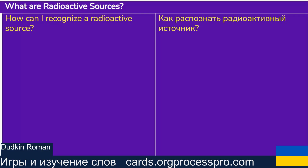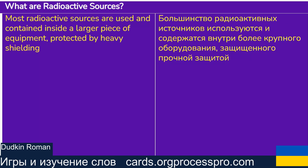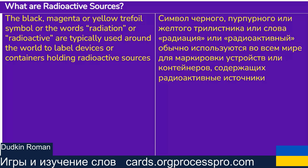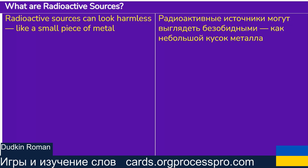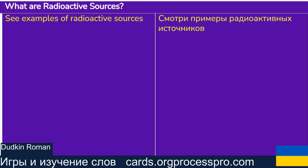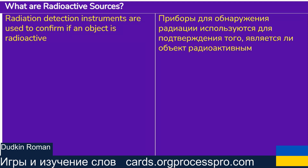How can I recognize a radioactive source? Most radioactive sources are used and contained inside a larger piece of equipment, protected by heavy shielding. The black, magenta or yellow trefoil symbol, or the words 'radiation' or 'radioactive', are typically used around the world to label devices or containers holding radioactive sources. Radioactive sources can look harmless, like a small piece of metal. Radiation detection instruments are used to confirm if an object is radioactive.